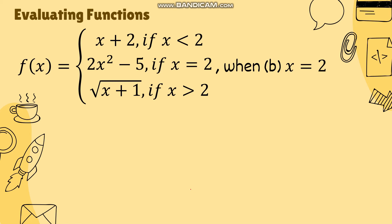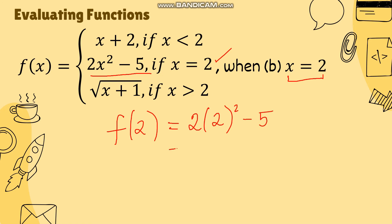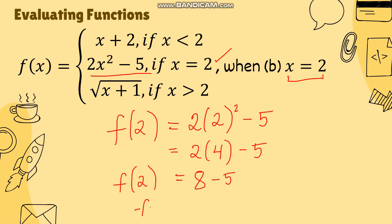Let's use the same piecewise function, but this time x is equal to 2. To evaluate, we identify which sub-function to use by checking the interval. Since the given value of x is equal to 2, we use the second sub-function, which is 2x² − 5. So f(2) equals 2 times 2 squared minus 5, which is 2 times 4 minus 5, giving us 8 minus 5, or f(2) is equal to 3.